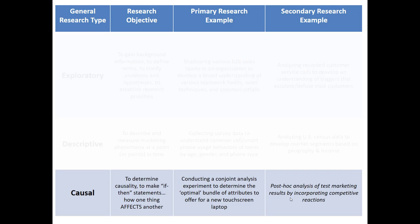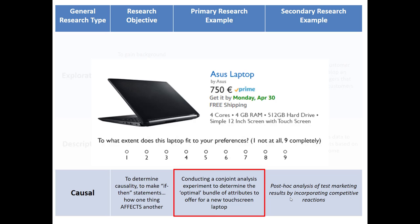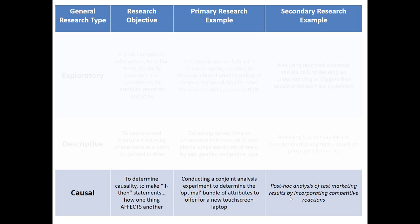As an example, for primary research, maybe we conduct a conjoint analysis, it's a type of experiment, to determine the optimal bundle of attributes to offer for a new touchscreen laptop. In other words, we know everybody wants the best memory, the best battery life, the best keyboard, and the best screen, but we don't know exactly what price we can sell that at. And we know that we would much rather make sure that at a given price point, we give people the features they do want and maybe make some trade-offs on the other features that aren't as important so that we can make sure we have a nice profit.